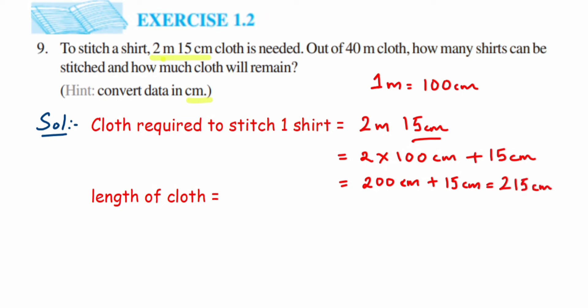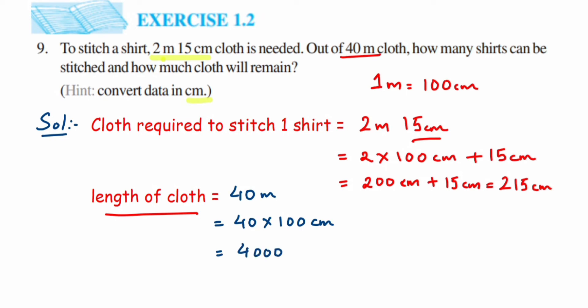The second conversion: the total length of cloth is 40 meters. This equals 40 multiplied by 100 centimeters. Whenever you convert a greater unit to a smaller unit, you multiply. So 40 meters equals 4000 centimeters.